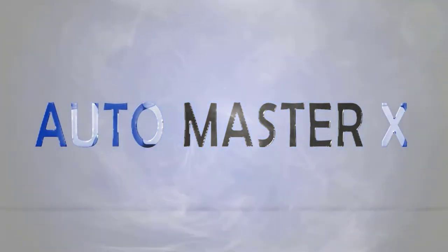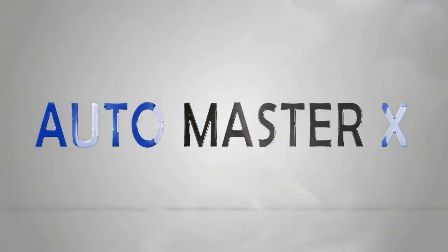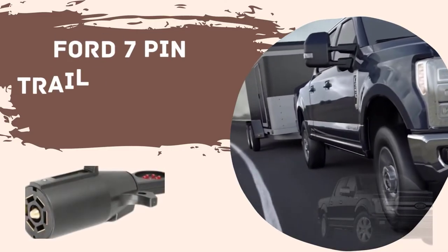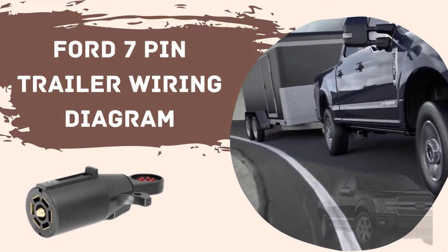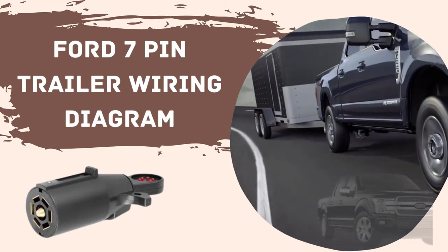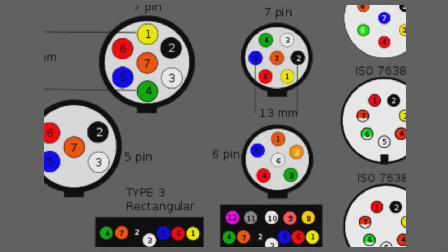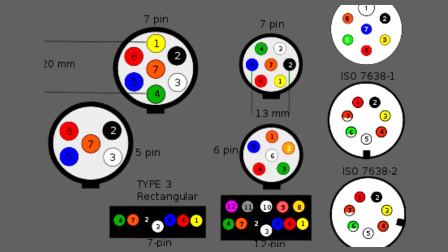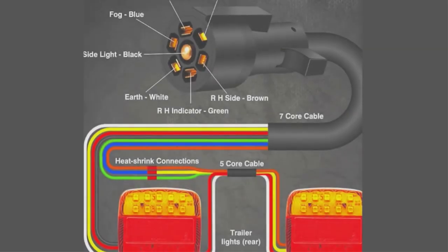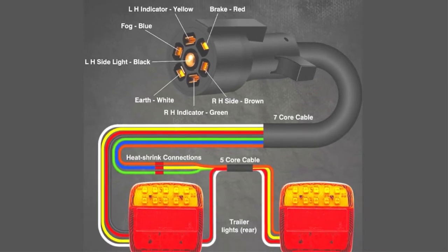Welcome you all to Auto Master X. Today we will learn about Ford 7 pin trailer wiring diagram explanation and more. Let's start. So basically there are different types of connectors that are working for 4 to 7 pins and the job is to deliver any power for the lighting as well as auxiliary functions to be held without errors.